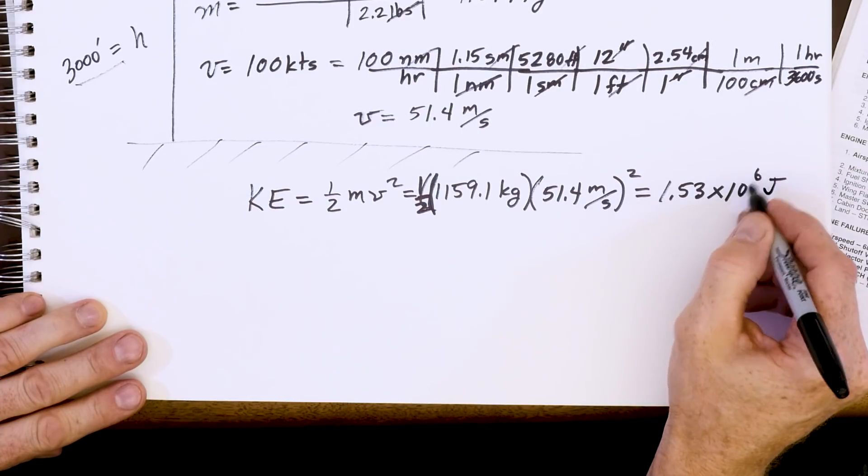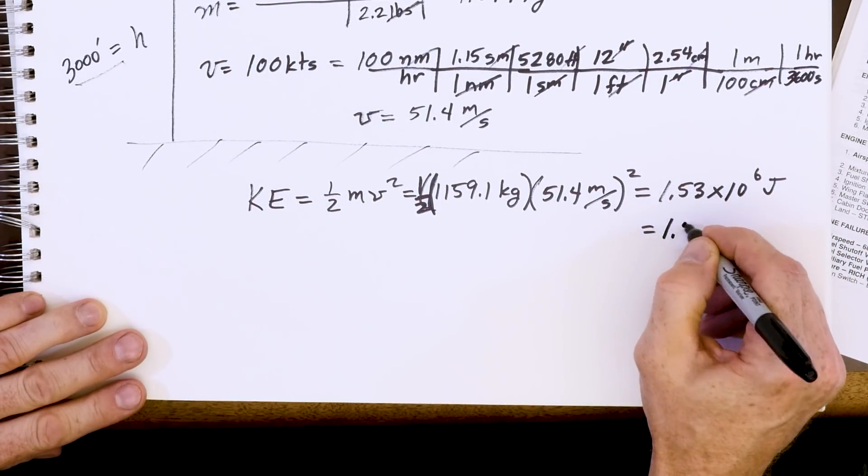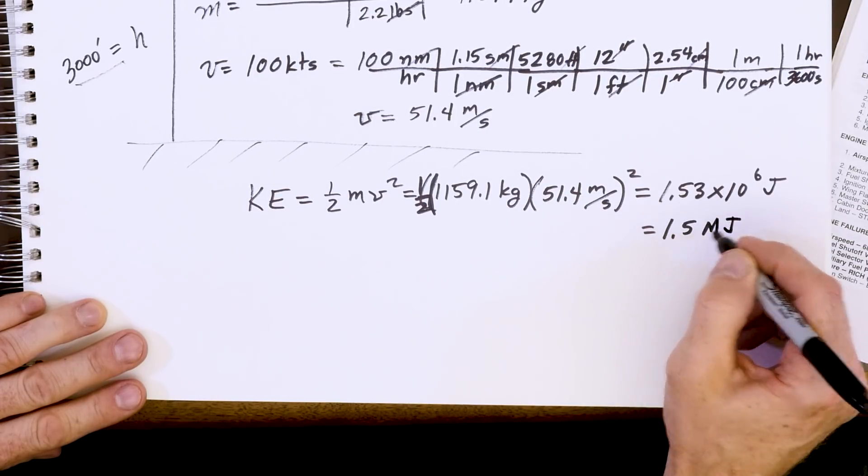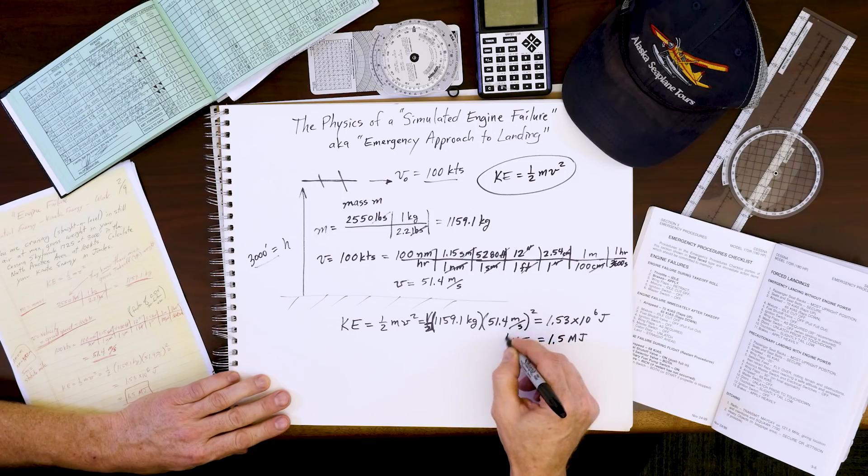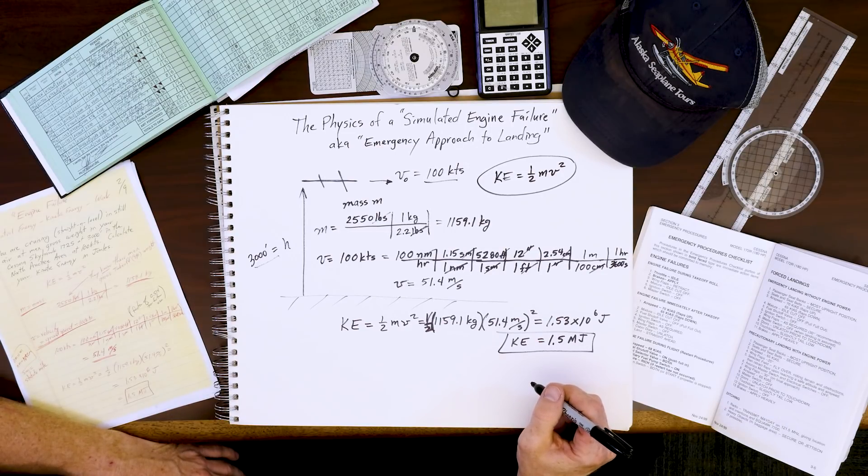Some very large amount. 10 to the sixth is a million. And in physics class, we like to be cool and call this 1.5 mega joules of energy. All right. Next video clip, we'll do the potential energy and the total energy.